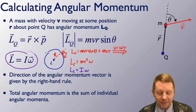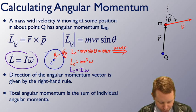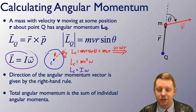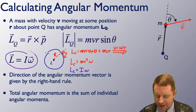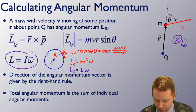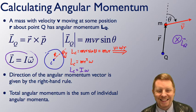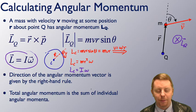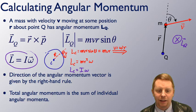The direction of the angular momentum is given by the right-hand rule. If we point the fingers of our right hand in the direction of the position vector to point M, and then bend the fingers in the direction of the momentum vector, the thumb points into the page. So that's the direction of the angular momentum about point Q — into the plane of the page. Finally, the total angular momentum of a system is the sum of the individual angular momenta of all of the particles of that system.